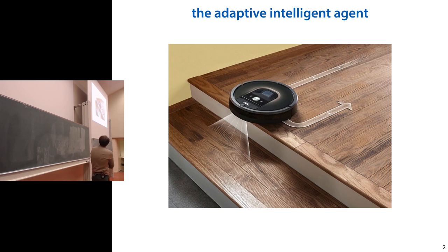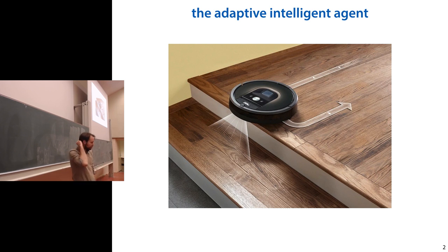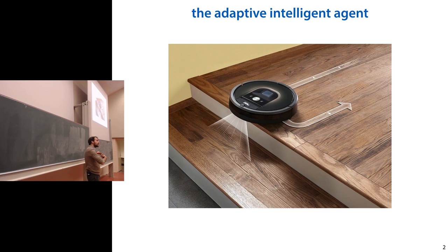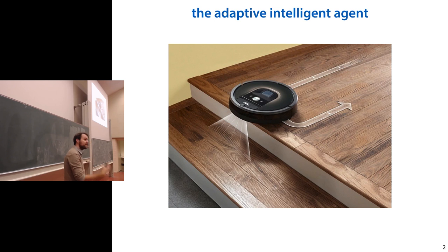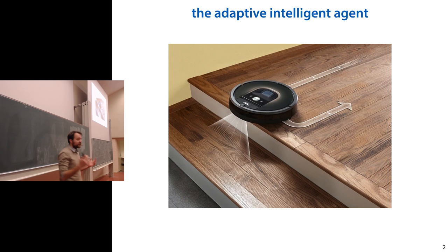Here's an example: a robot vacuum cleaner. When you buy it and unpack it and put it in your bedroom, it will see that bedroom for the first time. It's not pre-trained for your bedroom, so it has to learn on the fly to interact with your environment, to find dust, to find a power socket to recharge itself. This is a case where the offline learning paradigm doesn't really apply.